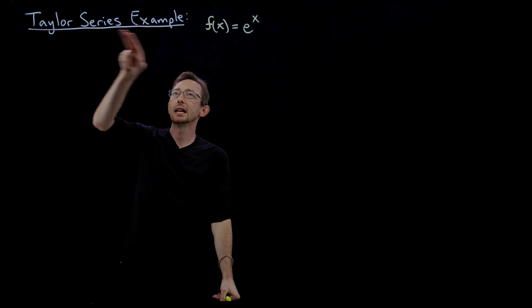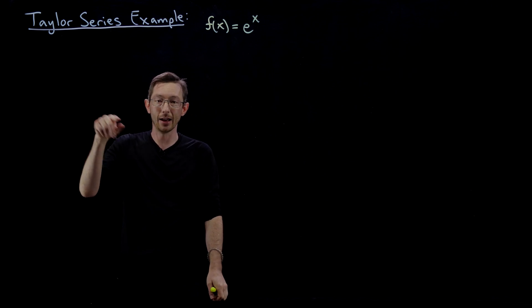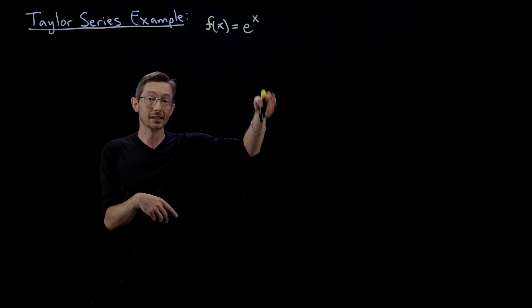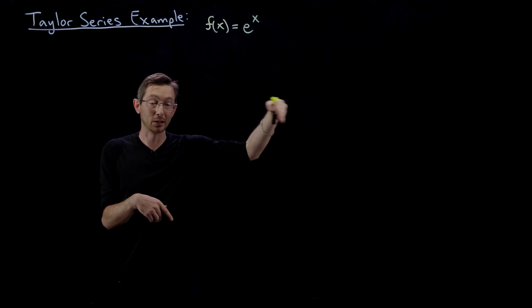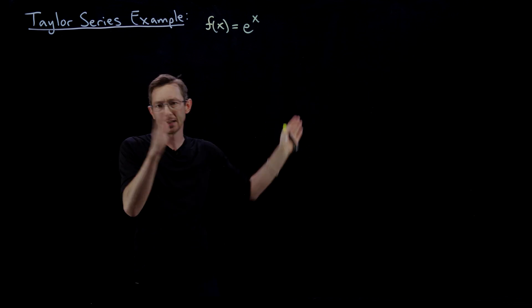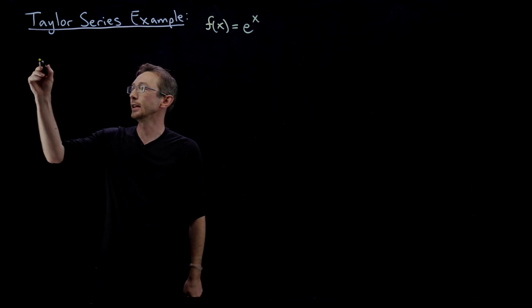So the Taylor series, in the last lecture I showed you how to derive this: f(x) is approximately f(0) + f'(0)·x + f''(0)·x²/(2!) + ... you can write this out. I'm just going to write out what the Taylor series is for e^x.